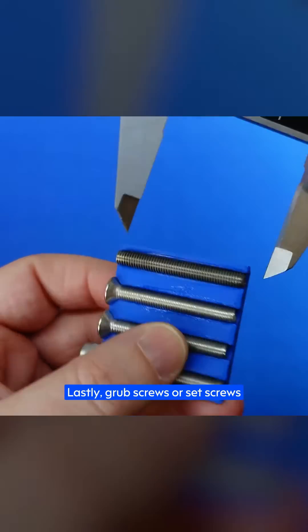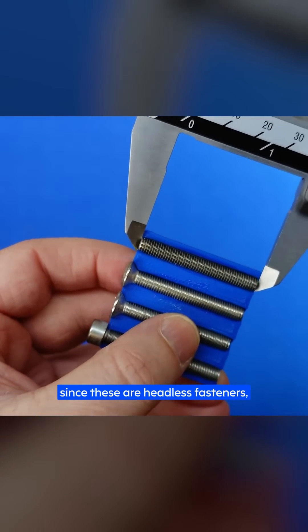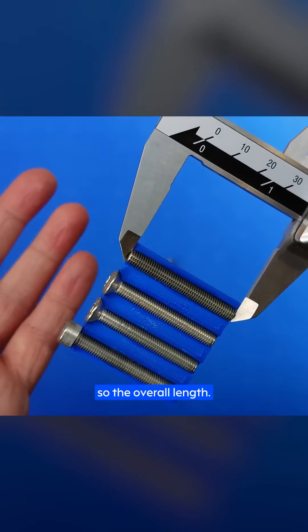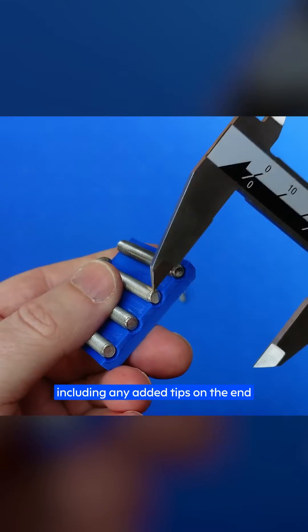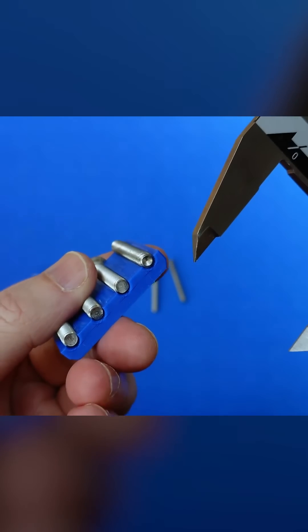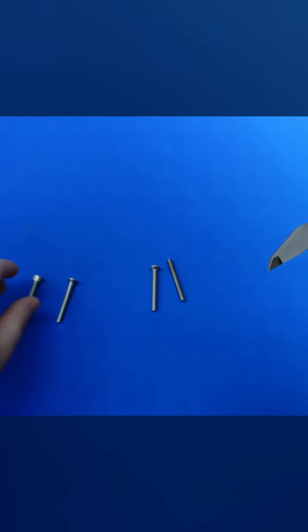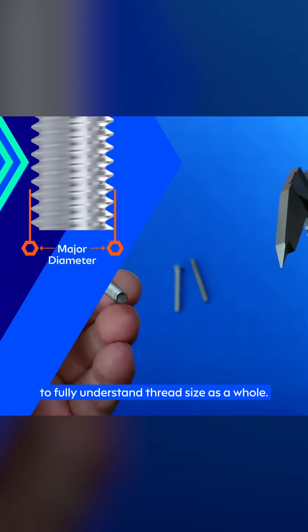Lastly, grub screws or set screws, whichever you want to call them. Since these are headless fasteners, the only way to really measure the length of them is to measure the entire thing, so the overall length, tip to tip, including any tips on the end, like a nylon point or ball spring. So now we know how to measure length, let's move on to measuring the thread size of the screw.